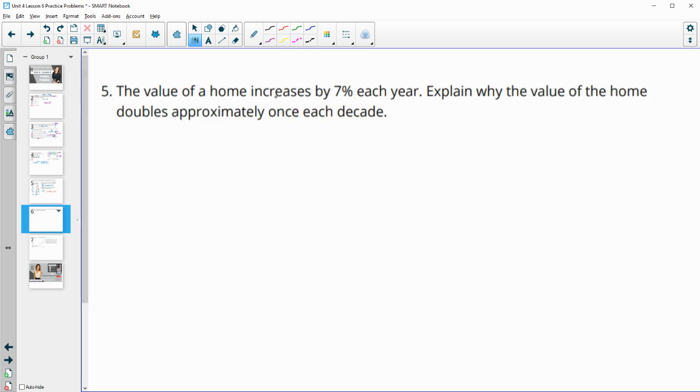Number five, the value of a home increased by 7% each year. Explain why the value of the home doubles approximately once every decade. And remember a decade, so one decade is equal to 10 years. So this will have increased by a factor of, well, will increase 7% 10 times.